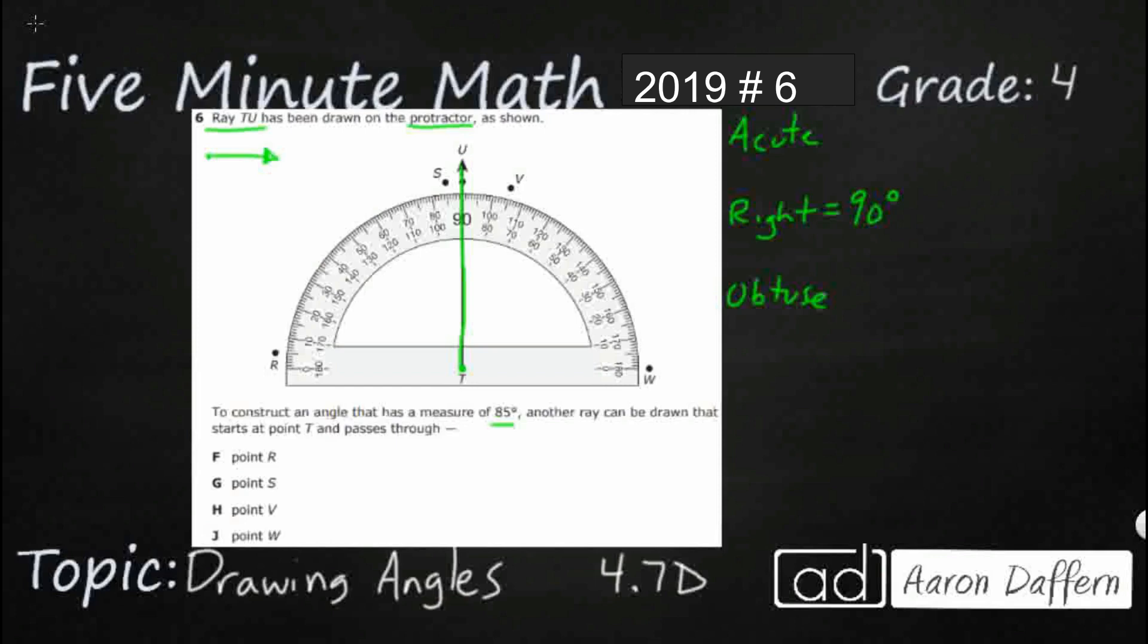It has perpendicular lines. So, acute angles are anything less than that 90. And then, obtuse is anything greater than that 90.